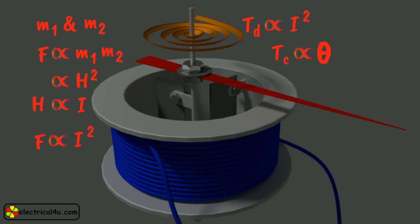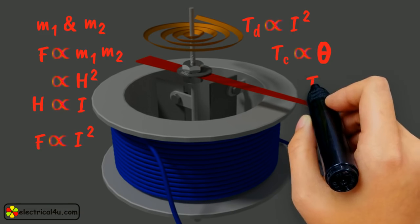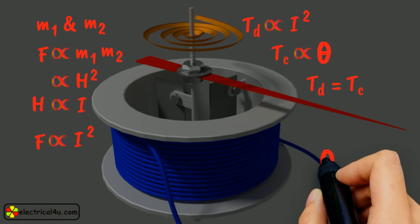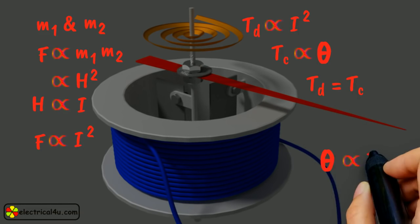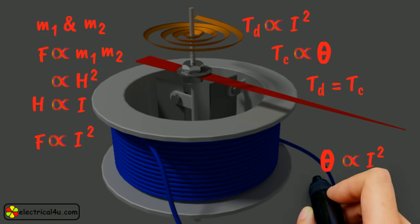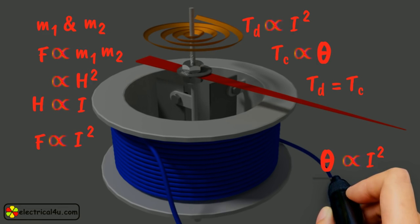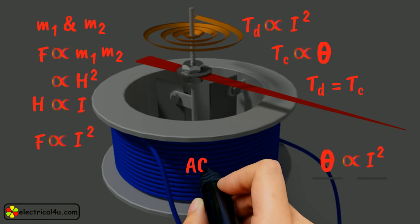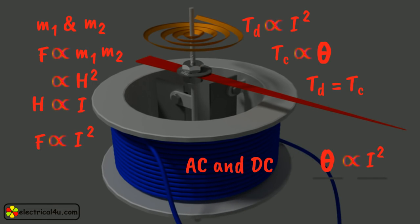In the steady position of deflection, T suffix D equals to T suffix C. So, theta proportional mean of I square over a cycle. Thus, the deflection is proportional to the square of the coil current. As the angular displacement of the moving system of the meter is proportional to square of the current to be measured, it is proved that the instrument can be used for both AC and DC.